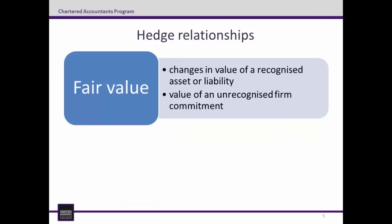A fair value hedge is the hedge of the exposure to changes in the fair value of a recognised asset or liability, or in the value of an unrecognised firm commitment that could impact on an entity's profit or loss. For example, if I'm an Australian-based entity and I currently owe £100,000 — a recognised liability — and I use a hedging instrument to mitigate my exposure to changes in the fair value of that £100,000, this would be a fair value hedge.